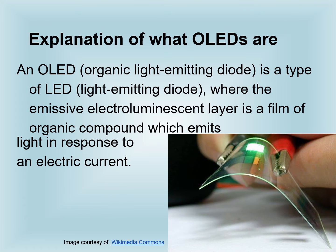An Organic Light Emitting Diode is a type of Light Emitting Diode where the emissive electroluminescent layer is a filling of organic compound, which emits light in response to an electric current. We are all familiar with ordinary Light Emitting Diodes, but in OLEDs we have organic layers.